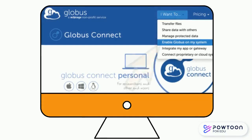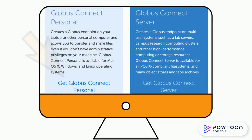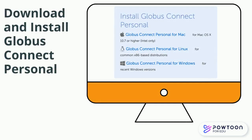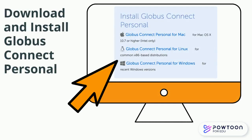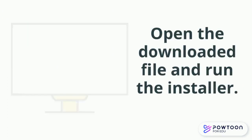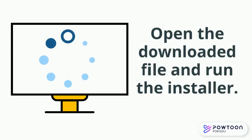Select 'I want to' and click 'Enable Globus on my system.' Click 'Get Globus Connect Personal.' Click the correct software for your computer system under Install Globus Connect Personal. Open the downloaded file and follow the on-screen install instructions.